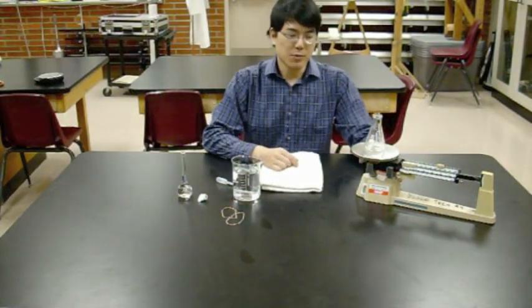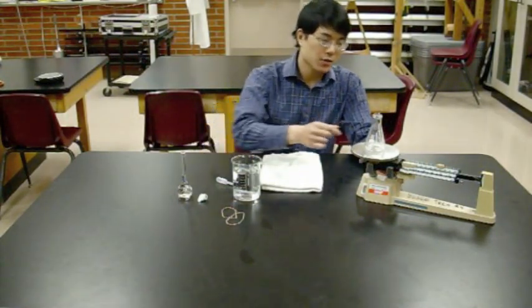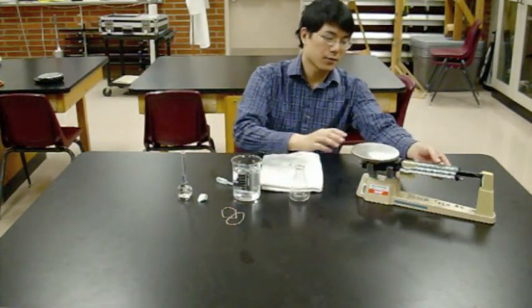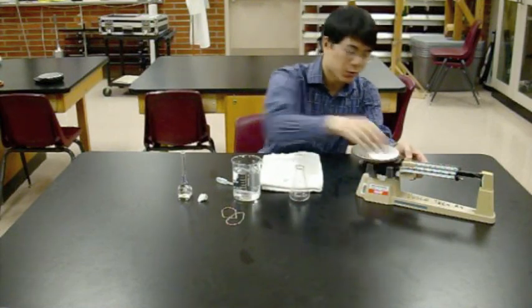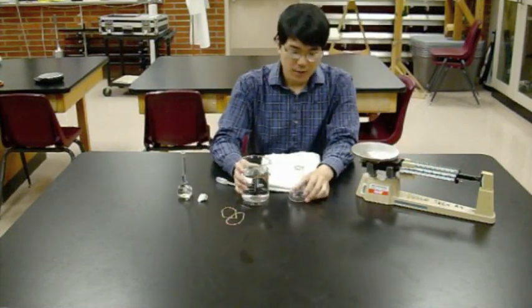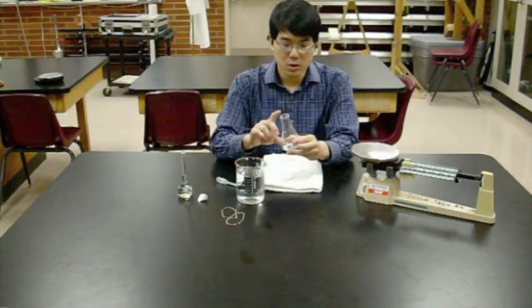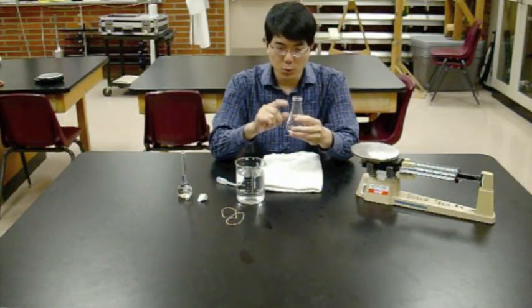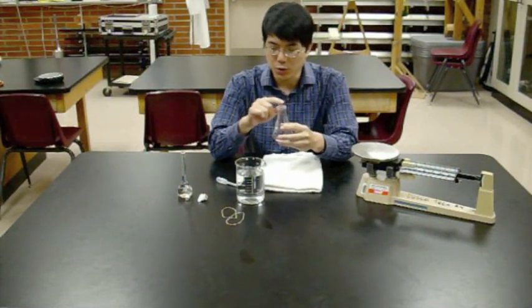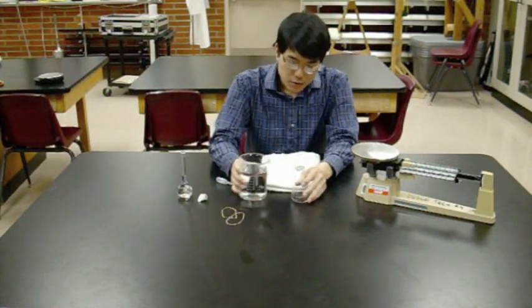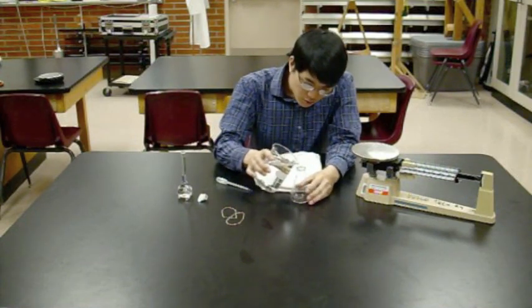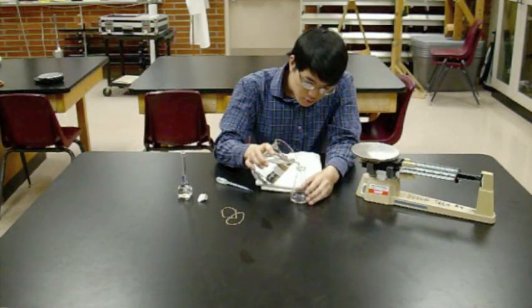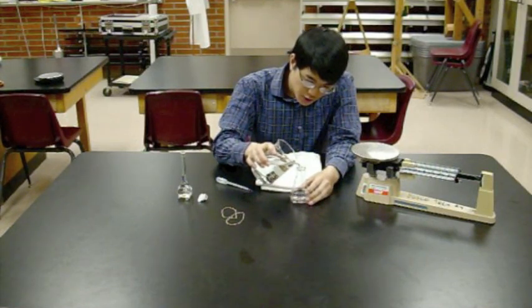So that's a mass of your empty volumetric flask. Take it off. Reset all your sliders. Fill it to the brim with water. You want to get the mass of as much water as this thing can hold. Fill this thing all the way up with tap water.